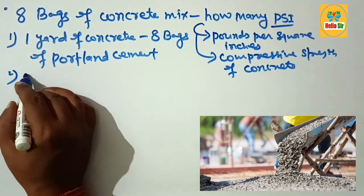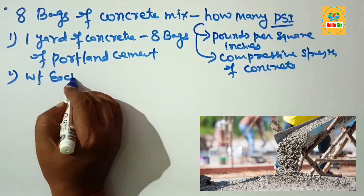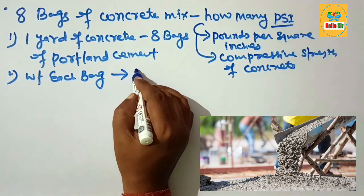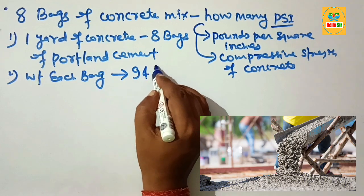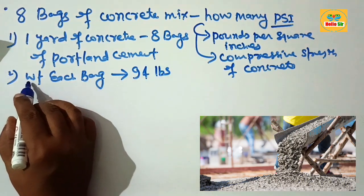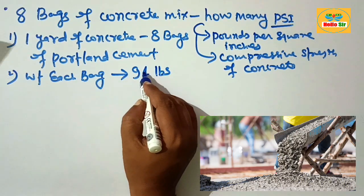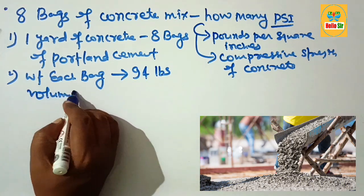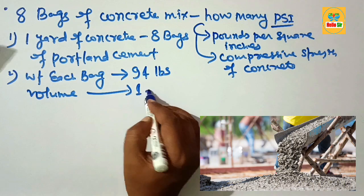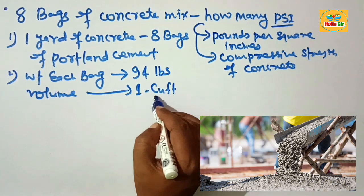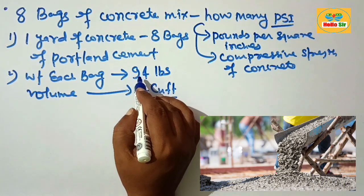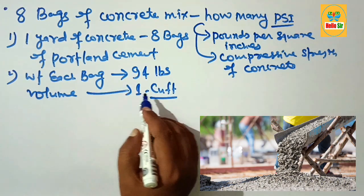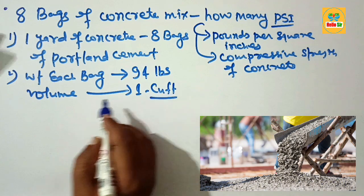The weight of each bag of Portland cement is about 94 pounds, and it yields a volume of about 1 cubic foot. So 1 bag of Portland cement weighs 94 pounds and has a volume of 1 cubic foot.